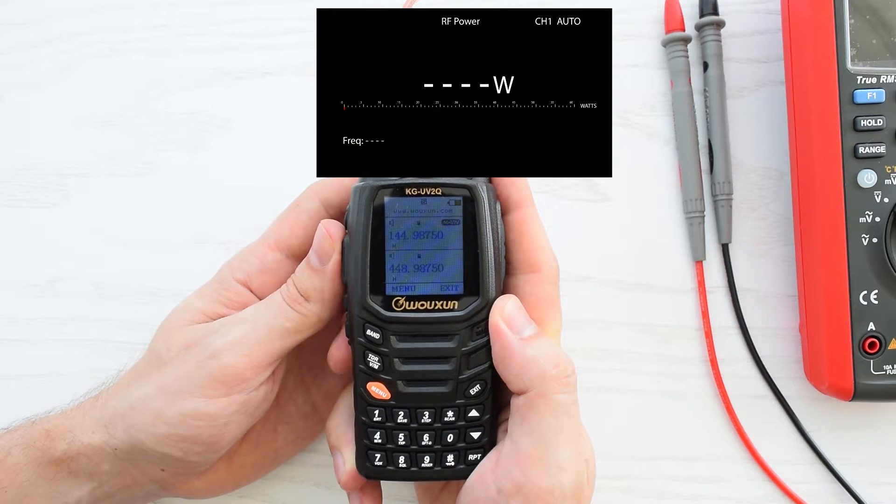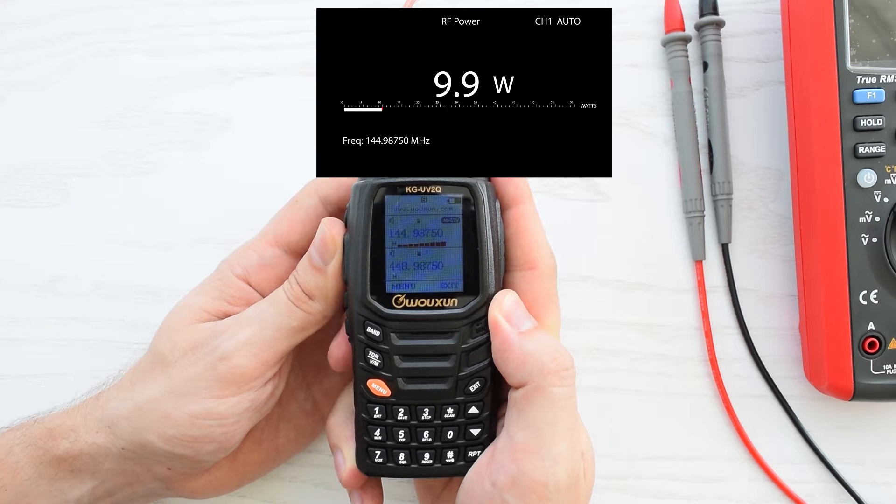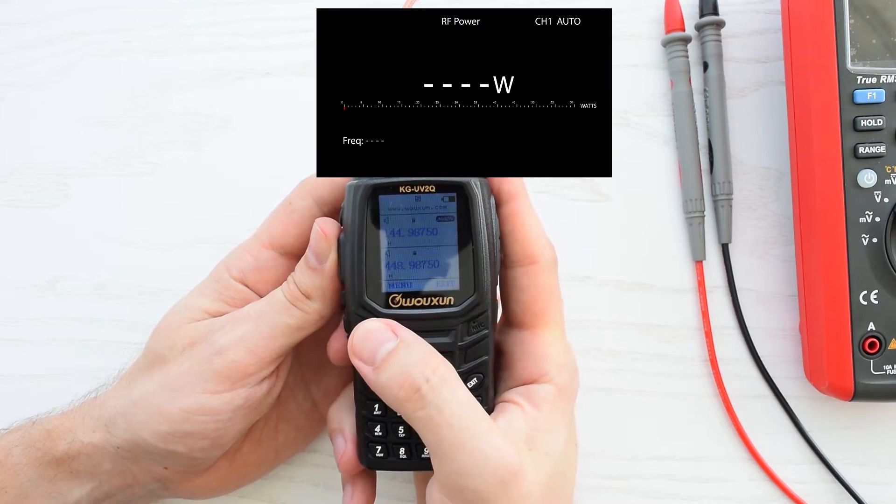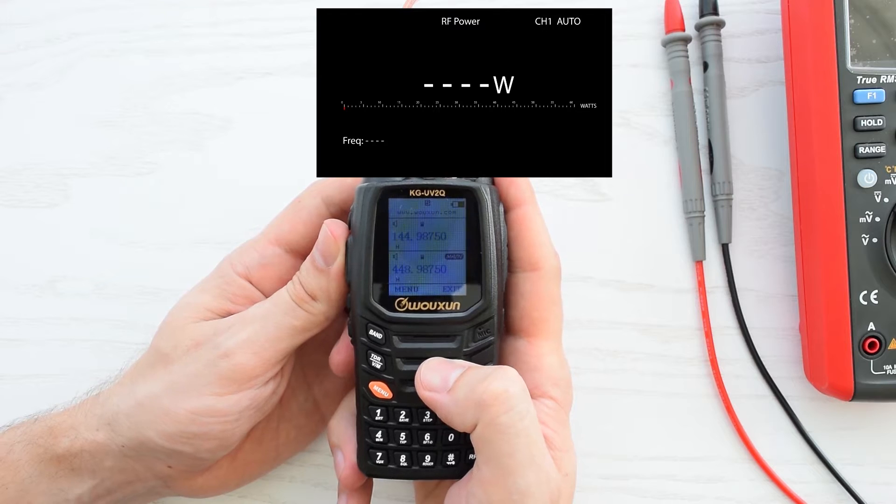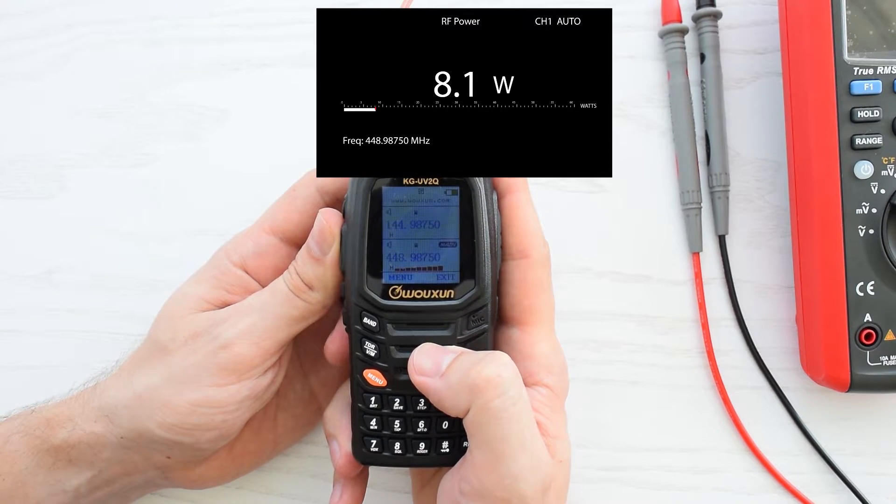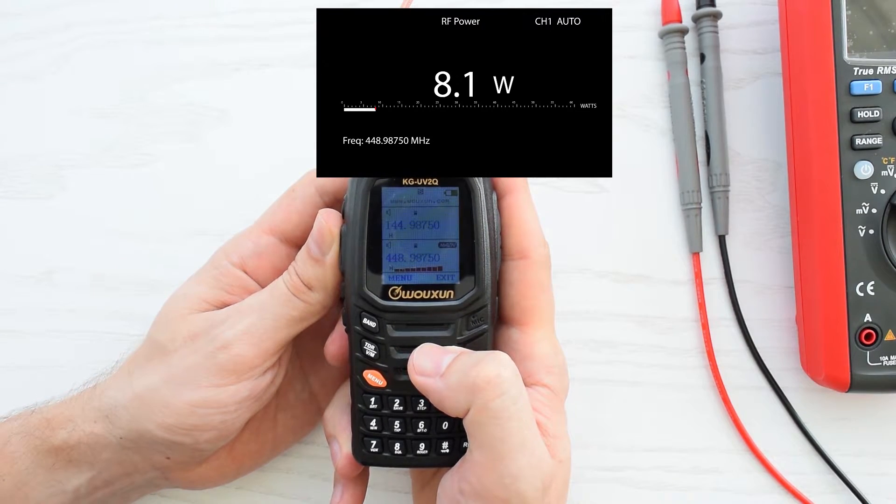Now let's check transmitter power output. We got 9.9W in the VHF and 8.1W in the UHF bands.